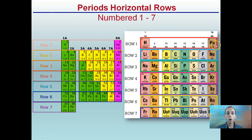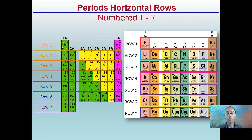Now continuing on in our periodic table, the periods are horizontal rows — row 1, row 2, row 3, row 4, also referred to as period 1, period 2, period 3, and period 4, and so on. It's important to remember that period 1 or row 1 contains hydrogen and helium. So when students go through and want to count carbon or nitrogen or oxygen, they'll mistakenly say that's row 1. Remember, this is all row 2 — row 1 only contains hydrogen and helium.